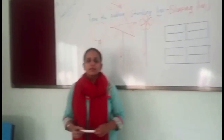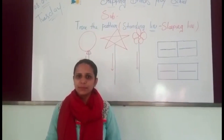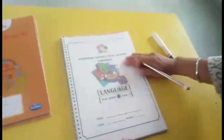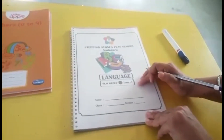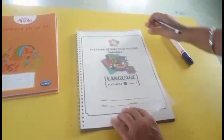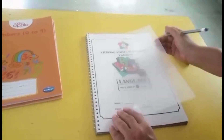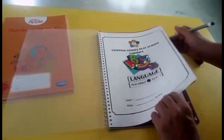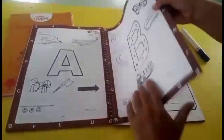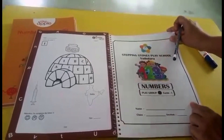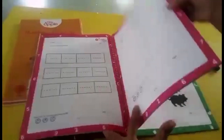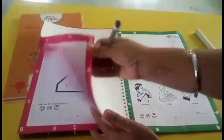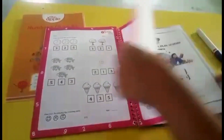So to get more clear with standing line and sleeping line, we will now practice in the book. Children, you all must be having this book. This is our book, term number one. This book is divided into three parts: the language part, the numbers part, and the next is GK.